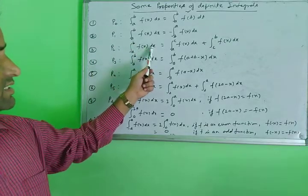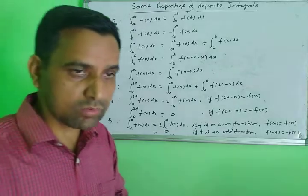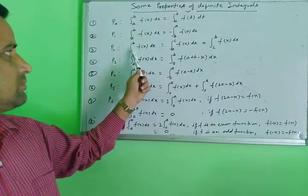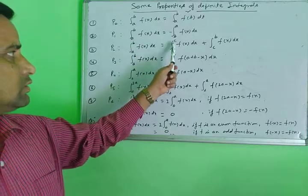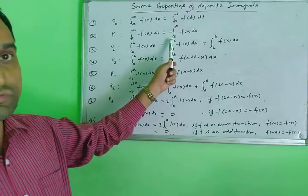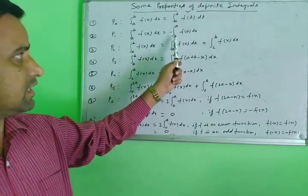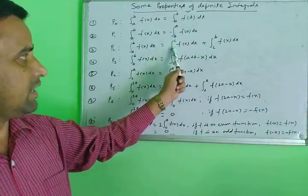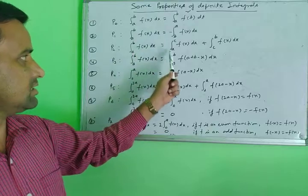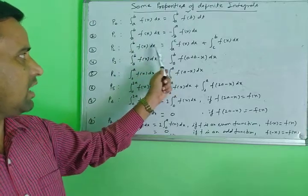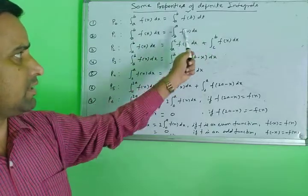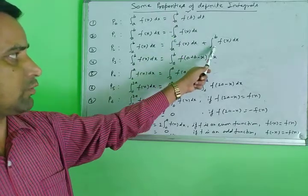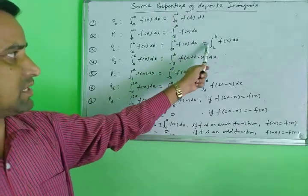The third property is P2. For the integral from a to b of f(x) dx, you can break it down into simpler parts: from a to c of f(x) dx plus from c to b of f(x) dx. Here a is the lower limit, b is the upper limit, and c is an intermediate limit you introduce.